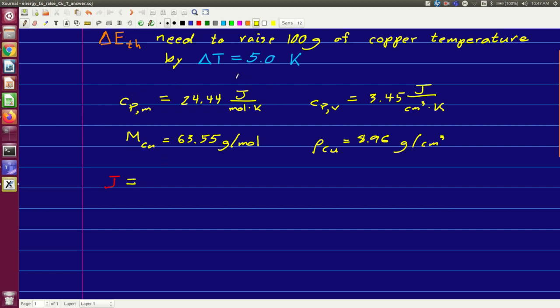Let's take these molar quantities. So we have a molar-specific heat capacity in joules per mole Kelvin, and if we want to get joules, we're going to have to multiply it by a temperature in Kelvins, that's our delta T, and we're going to have to multiply it by a number of moles.